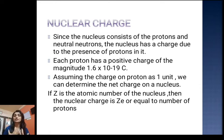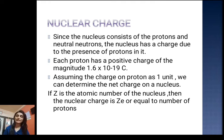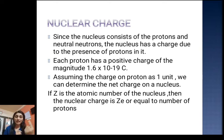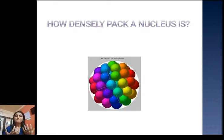The nucleus consists of protons and neutral neutrons. The nucleus has charge only due to the presence of protons, since neutrons carry no charge. Each proton has a positive charge of magnitude 1.6 × 10⁻¹⁹ coulomb. Assuming one unit of charge per proton, and since there are Z protons in the nucleus — where Z is the atomic number — the total charge on the nucleus is Z × e.